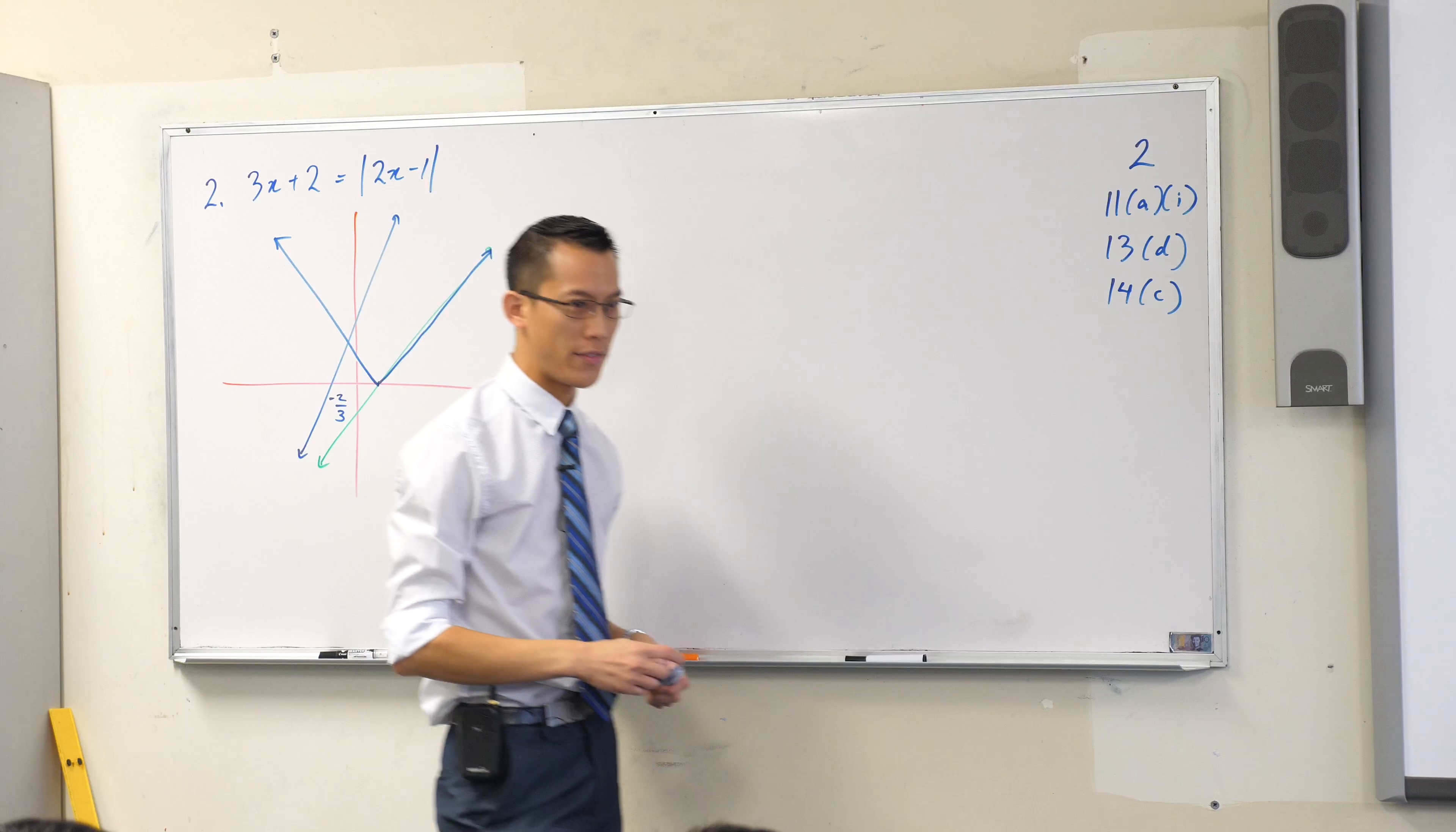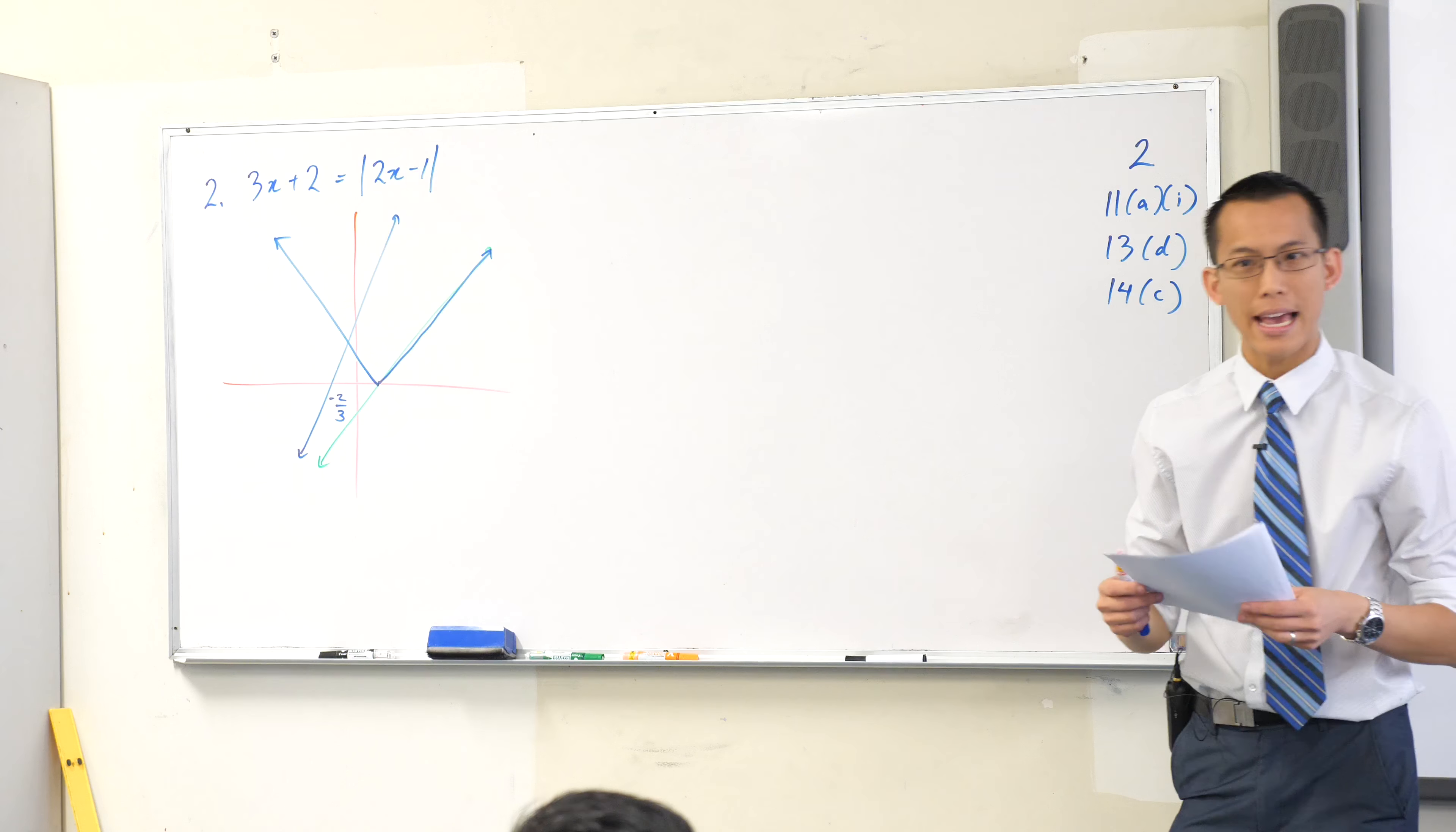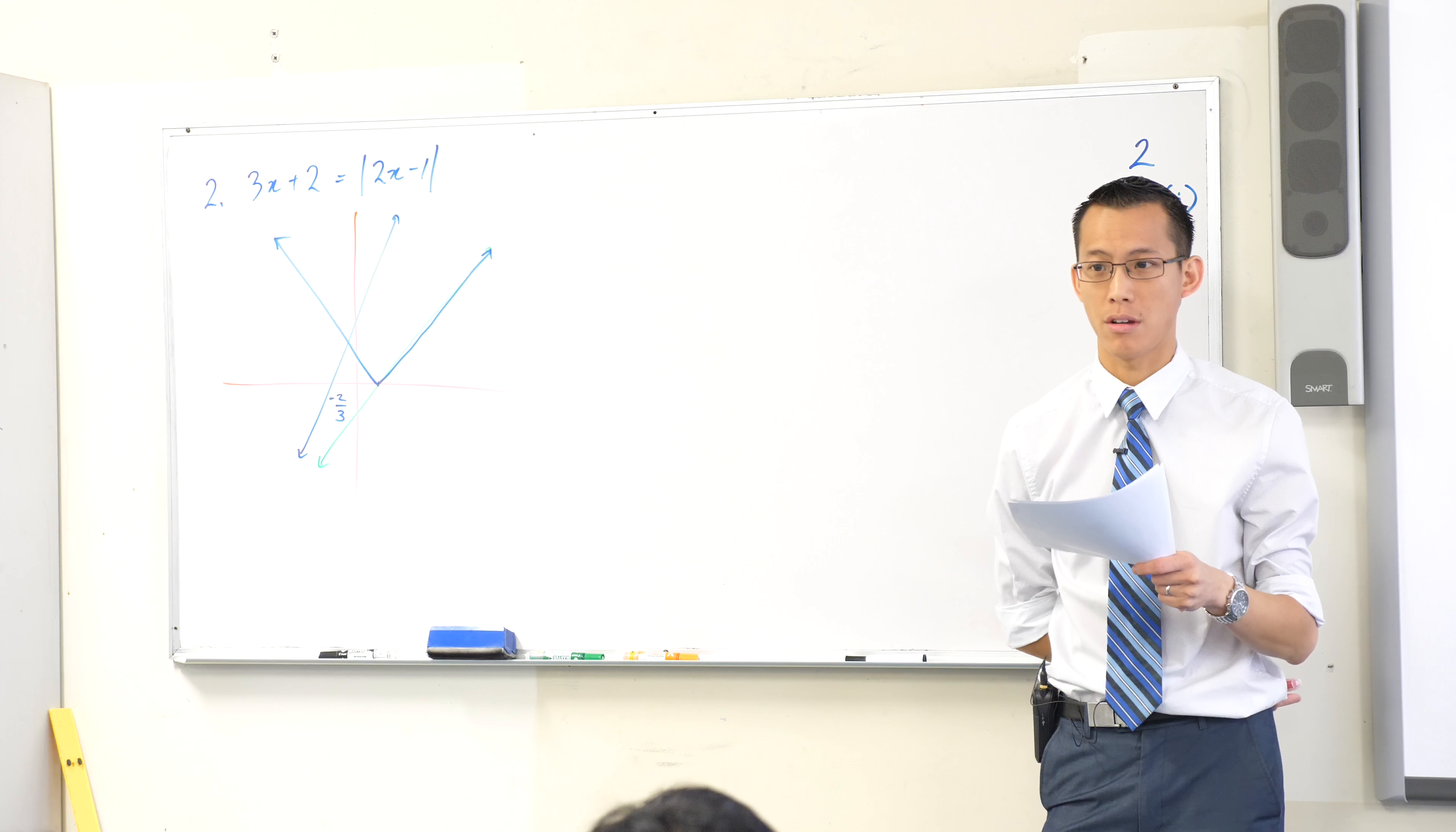Now you're looking for a point of intersection. Immediately, you can discount some of the solutions that are provided to you in this multiple choice question. Because if I have a look, A, B, C, D, you tell me which of these I can disregard. I can disregard C, which has no solutions, because no solutions graphically would mean that they never intersect, but they clearly do.